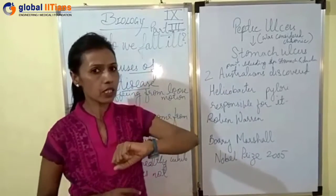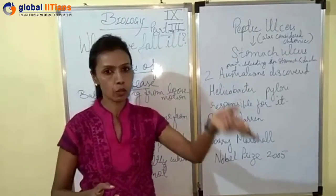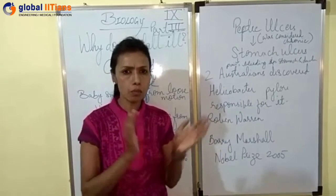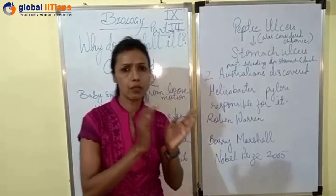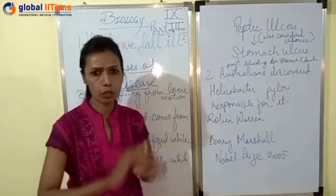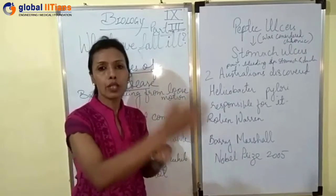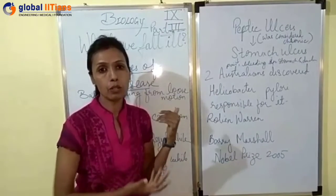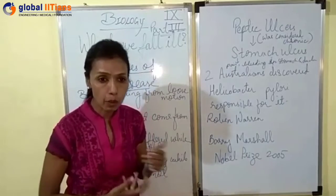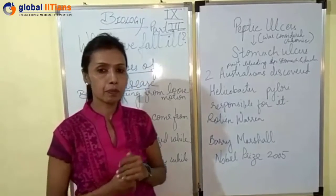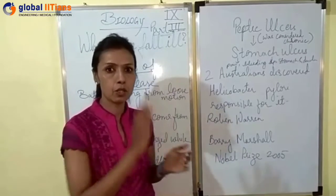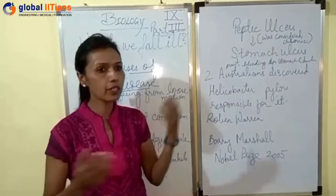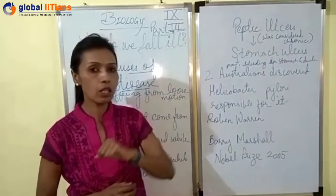Earlier we said acute diseases last only a small amount of time — a very short duration — like flu. Whereas chronic diseases last throughout the lifetime, having very adverse effects on health in the later stages of life or throughout the lifetime. Let me share one example with you all.